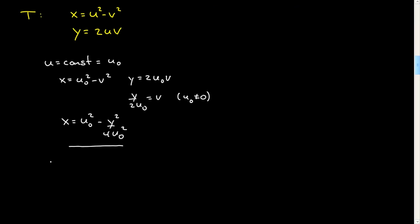In that case, v is equal to a constant. It's a very similar calculation. x will be equal to u squared minus v naught squared, y will be equal to 2u v naught.